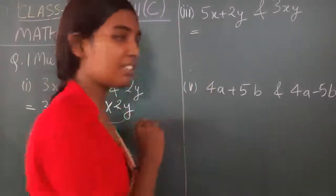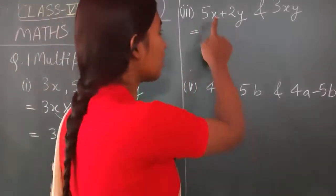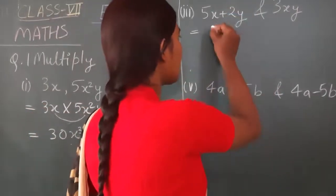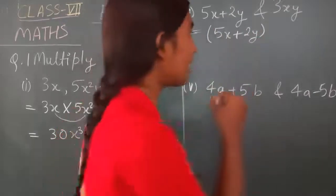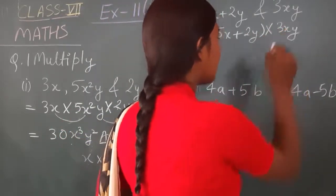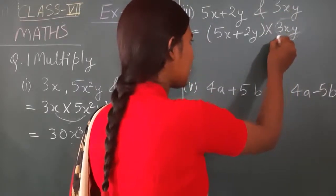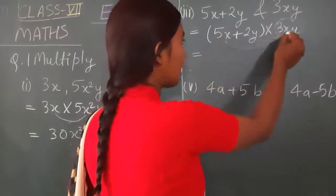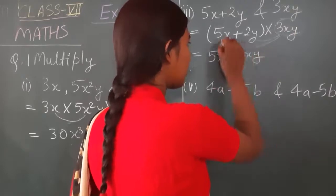The third question is a little different. Here there is no plus or minus in the simple terms, but in the first polynomial there is a plus sign. So we have (5x + 2y) multiplied by 3xy. We put the polynomial in a bracket with a multiply sign and 3xy outside. This term 3xy will multiply with the first term as well as the second term.